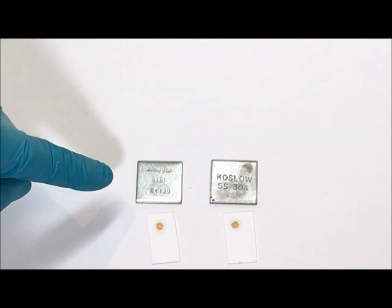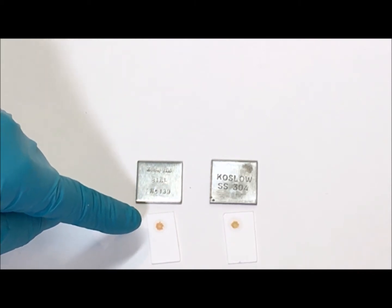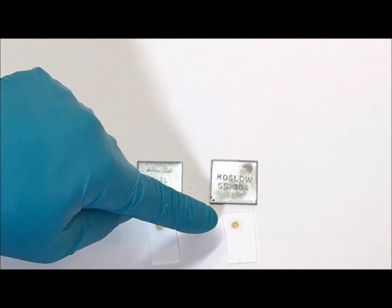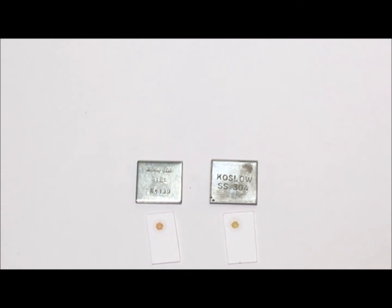I can see already that the 316 is giving a reddish spot and the 304 is not. It's more like a yellowish spot, but we'll give it some time and see if it looks a little better.